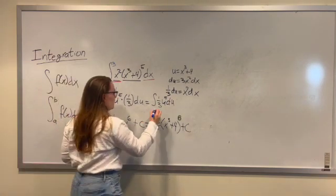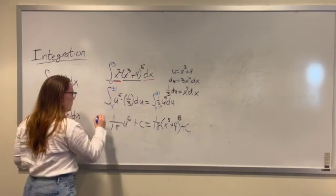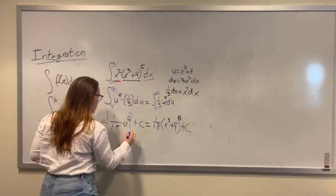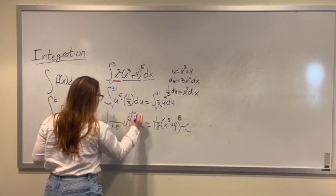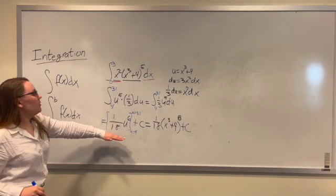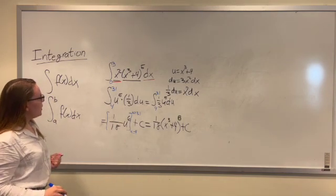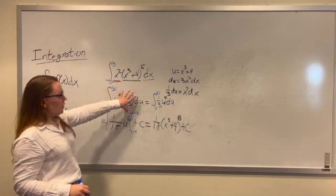That means that when we solve for this, we solve for u equals 4 to u equals 31. And we could leave it right there.